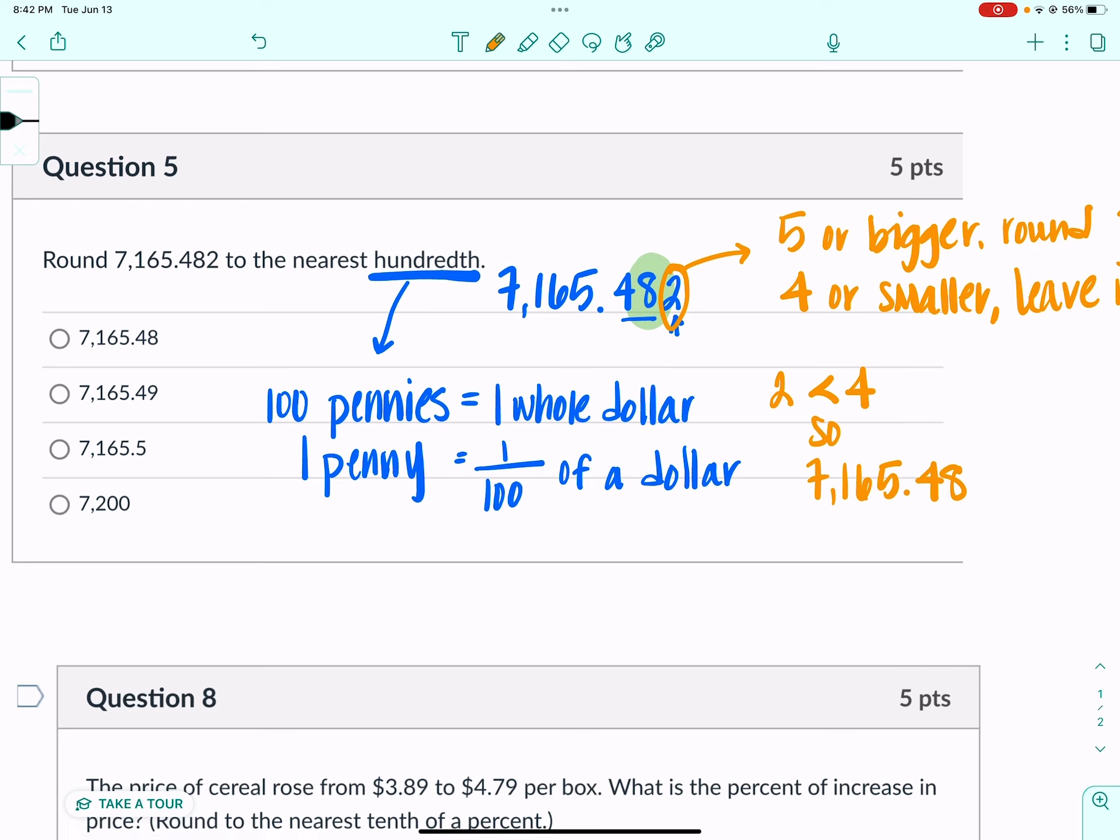If they had said round to the nearest tenth, well, you know that there are ten dimes in one dollar. So one dime is one tenth of a dollar. So if you're rounding to the tenth place, try looking at it as the dimes place.